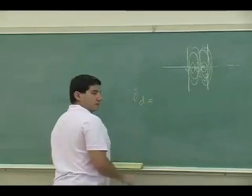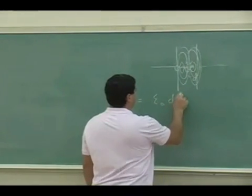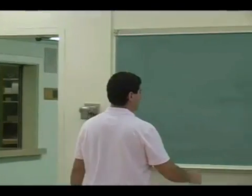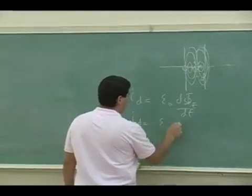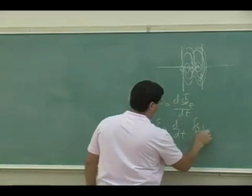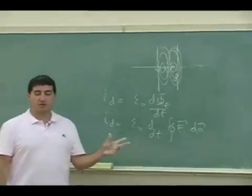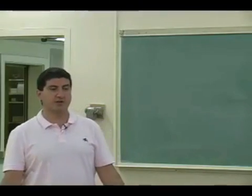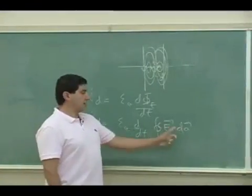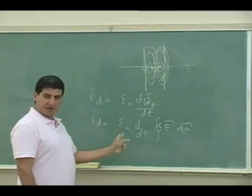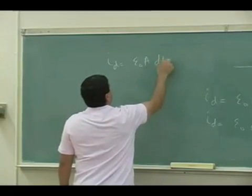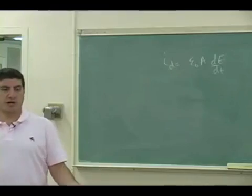Let's calculate the displacement current created by that and the magnetic field. The displacement current is just the epsilon-zero times d by dt of the integral E dotted into dA. We're going to be doing a similar thing in Chapter 31 with integral B dotted into dA for Faraday's law. This one is E dotted into dA, so it becomes EA, and the area comes out of the integral because the area is not changing. So we have dE/dt.